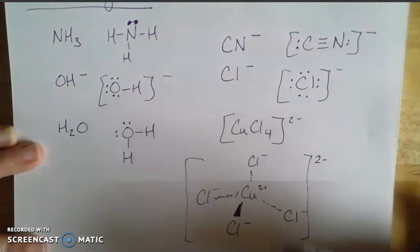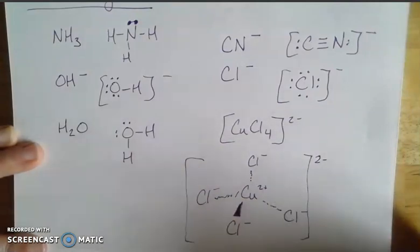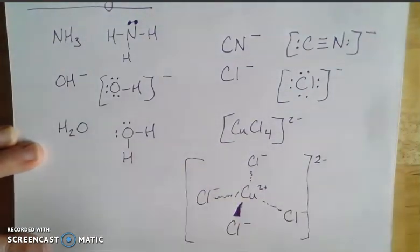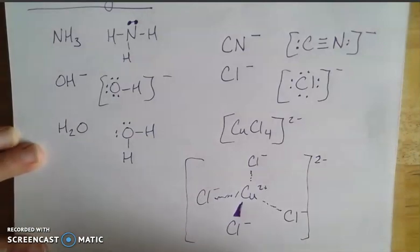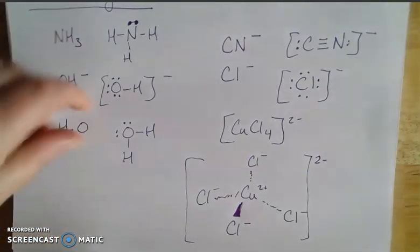So depending on how many are surrounding that, you can get a sense of the coordination number. The coordination number for this particular transition metal is going to be four, which gives it that tetrahedral geometry, which of course has those 109.5 degree angles that we've seen in molecular geometries before.